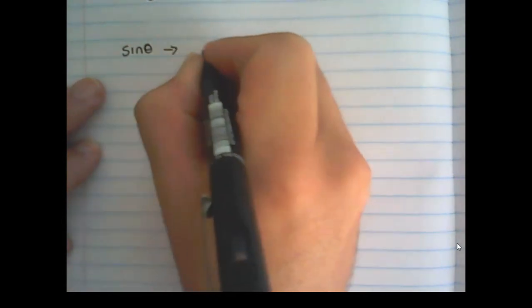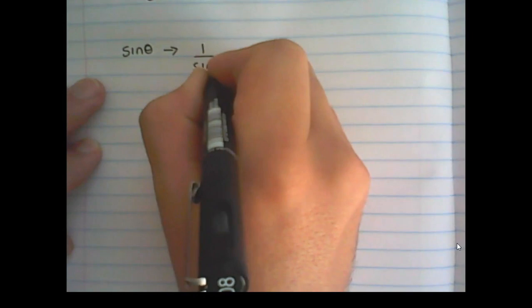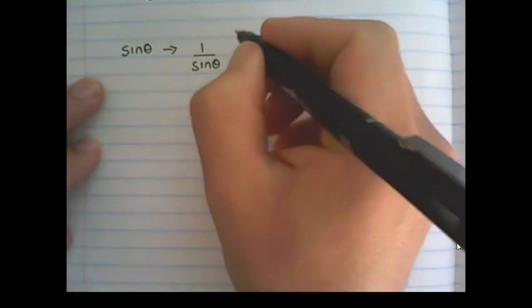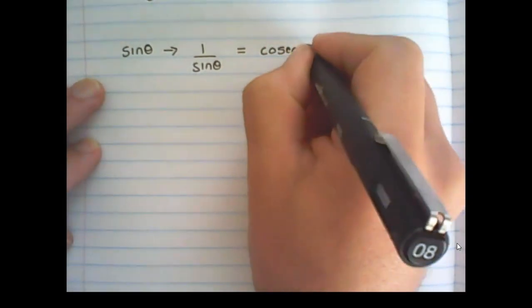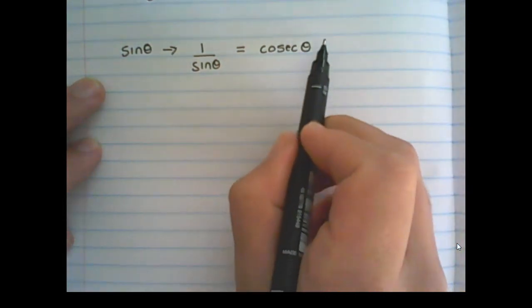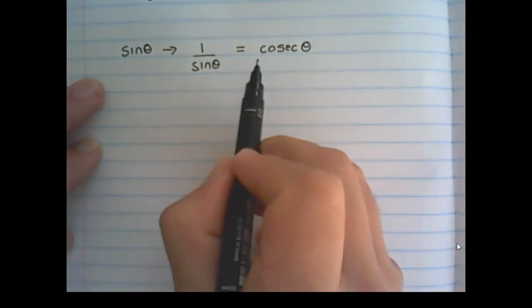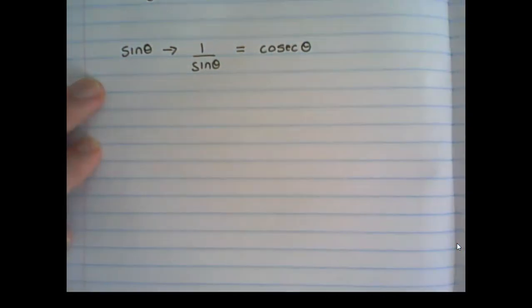The same counts in trigonometry. If I take sine theta, its reciprocal function is 1 over sine theta. But 1 over sine theta has a name and we call that cosec theta. So cosec theta is the same as saying 1 over sine theta.